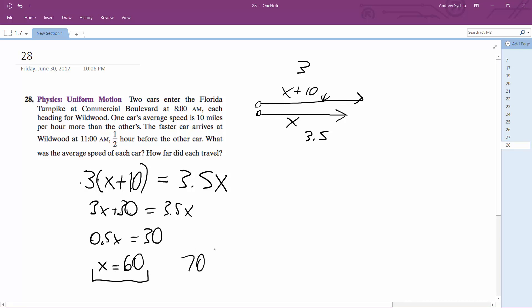So that means the other car is going 70. Let's check this out here real quick. So 210 miles divided by 70 is equal to 3 hours. 210 miles divided by 60 is equal to 3.5 hours.